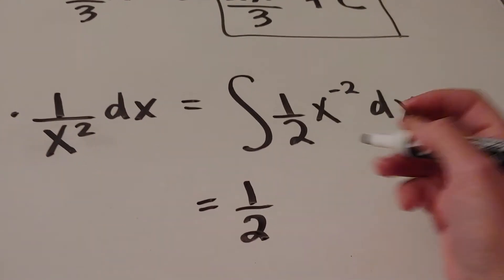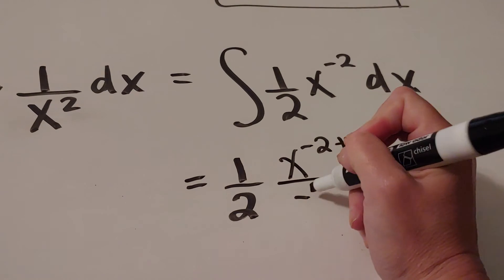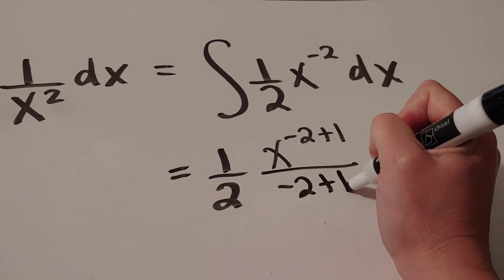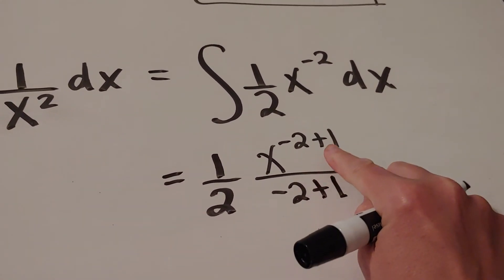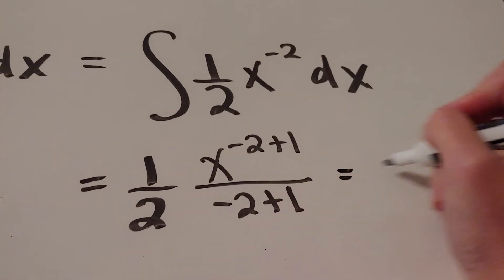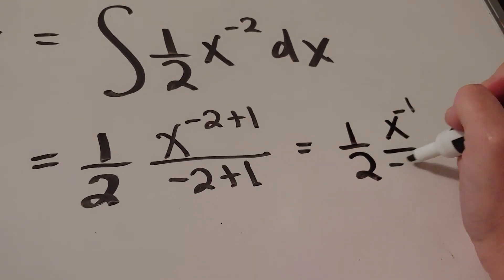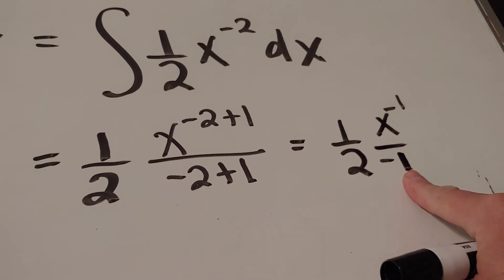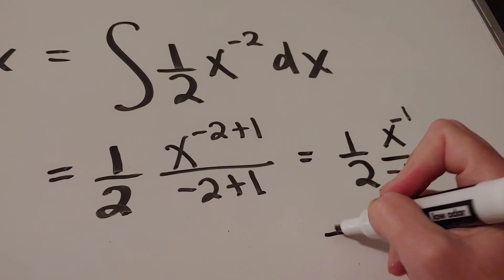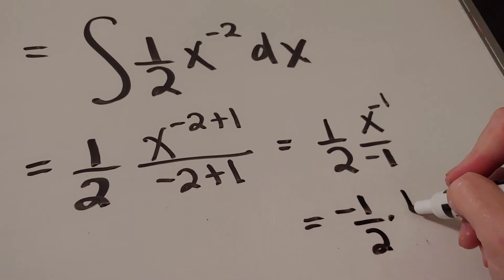So here, if I add a 1, so x to the negative 2 plus 1, and then that negative 2 plus 1 is what I'm dividing by. Okay, well, negative 2 plus 1 is negative 1, and this is negative 1. So this will be 1 half x to the negative 1 over negative 1, or that negative 1 will make a negative 1 half, and x to the negative 1 is the same thing as 1 over x.